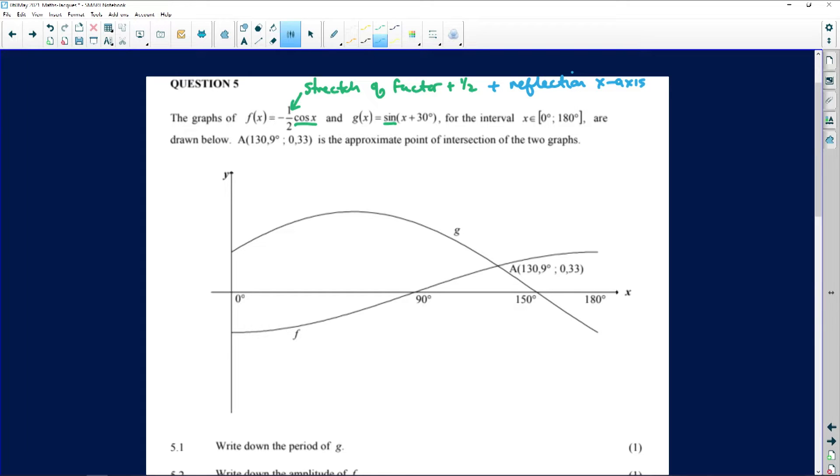For the sine graph something else happened. If you look at what happened over there we added 30 in the equation. So this here is a horizontal translation 30 degrees to the left. If we add in the equation we do the opposite. Okay, and also see that our domain lies from 0 to 180.